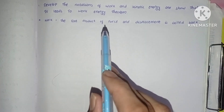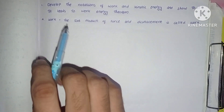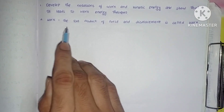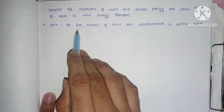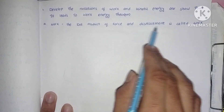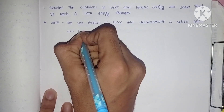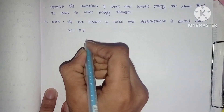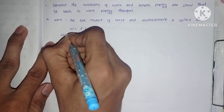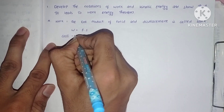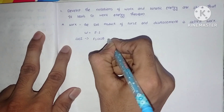Let us know the definition of work. Work is the dot product of force and displacement. The dot product of force and displacement is called work. So W can be written as F dot S.